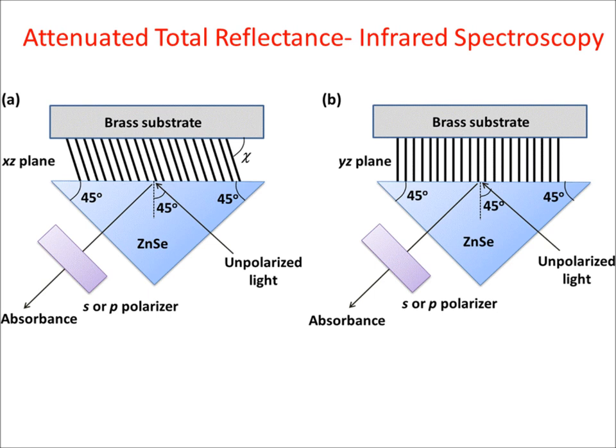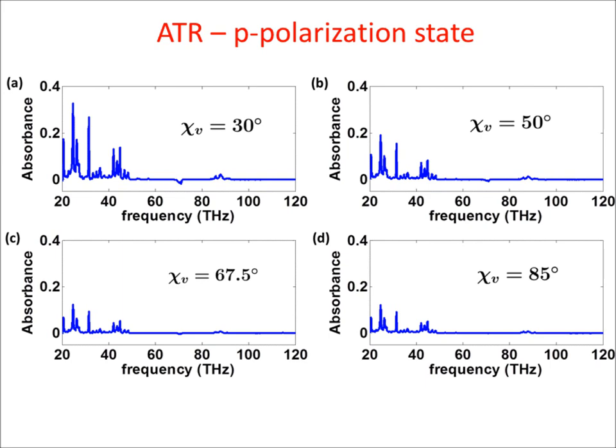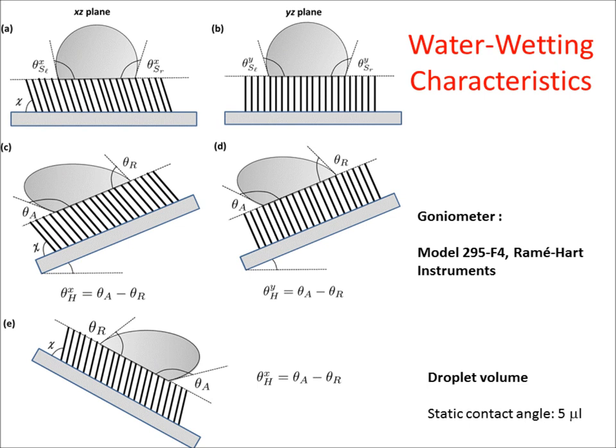So far, we found that the spatial frequencies of the columnar MIMUMs were different from those of the bulk film. We now examine the dependence of temporal frequencies on deposition angle by infrared spectroscopy. Attenuated total reflectance (ATR) experiments were performed on the bulk film and four columnar MIMUMs, one from each group, in both S and P polarization states as shown in the figure. We found that all peak frequencies are the same for all columnar MIMUMs and the bulk film in both polarization states, indicating that temporal frequencies do not change although the deposition process is altered.